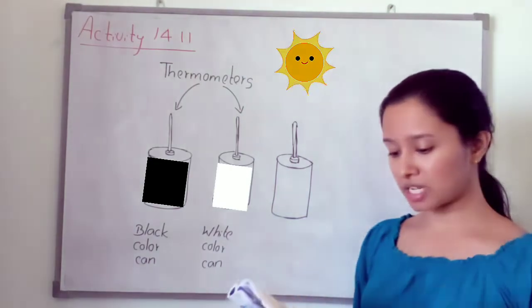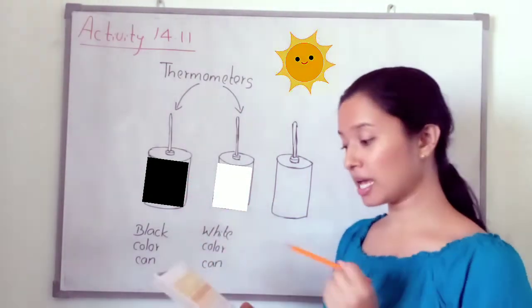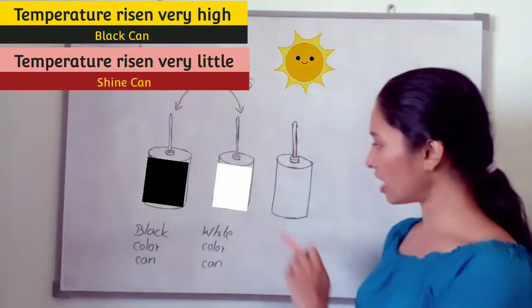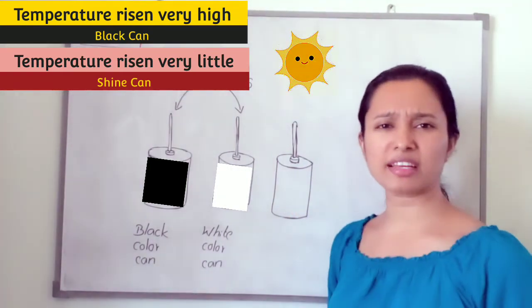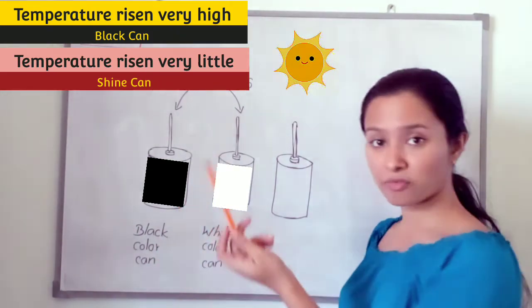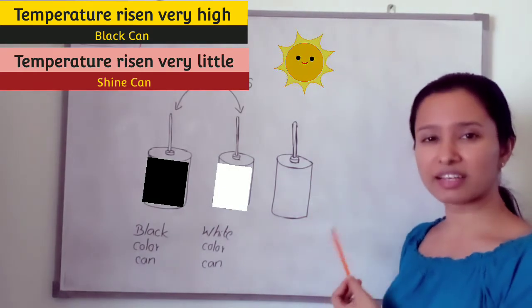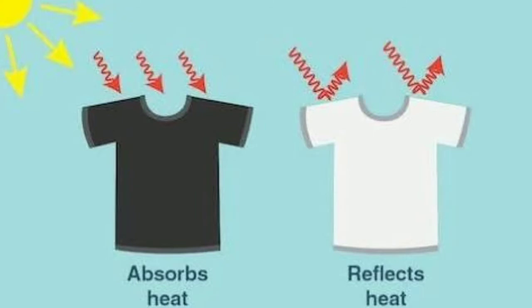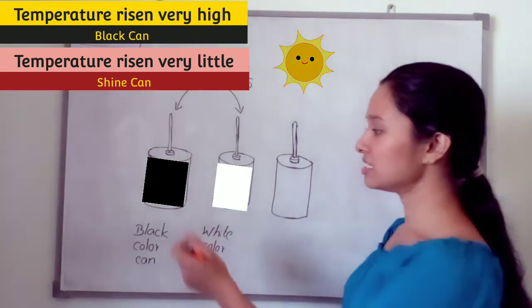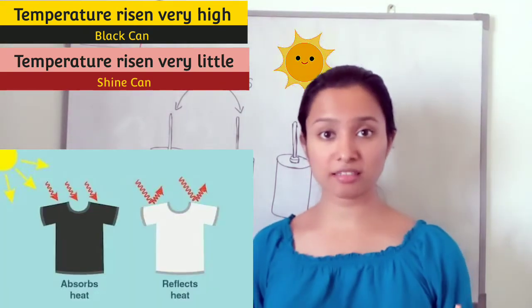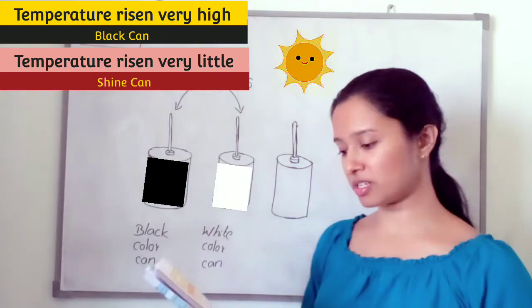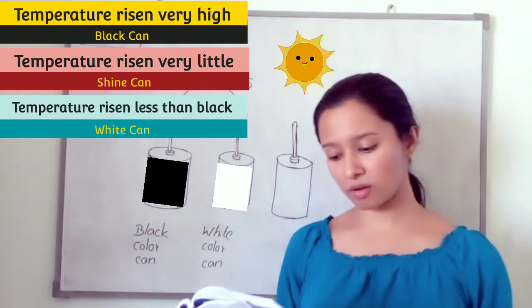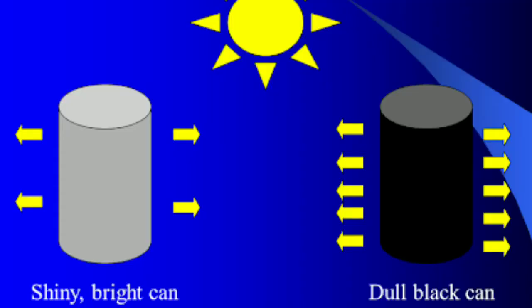After some time, we can observe that the temperature of water in the black can has risen higher, and the temperature of water in the can with the shiny outer surface has risen very little. The temperature rises fastest in the black-color surface and very little in the shiny surface. The water in the tin cans is heated by solar radiation. It is clear that black color absorbs radiated heat faster, while the shiny polished surface absorbs heat very slowly. White surfaces also absorb radiated heat, but less than black surfaces.